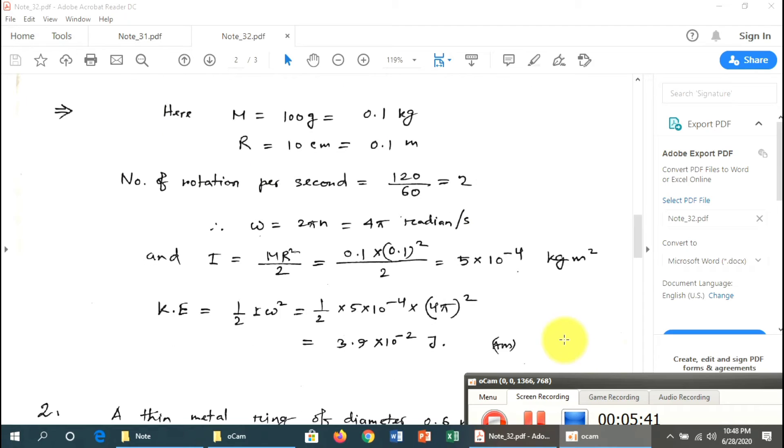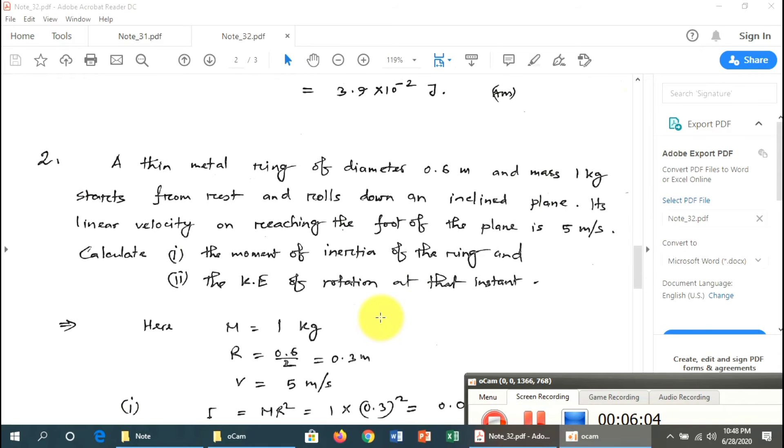The kinetic energy is KE = ½Iω². Substituting the values: KE = ½ × (5 × 10^-4) × (4π)² = 3.9 × 10^-2 joules.